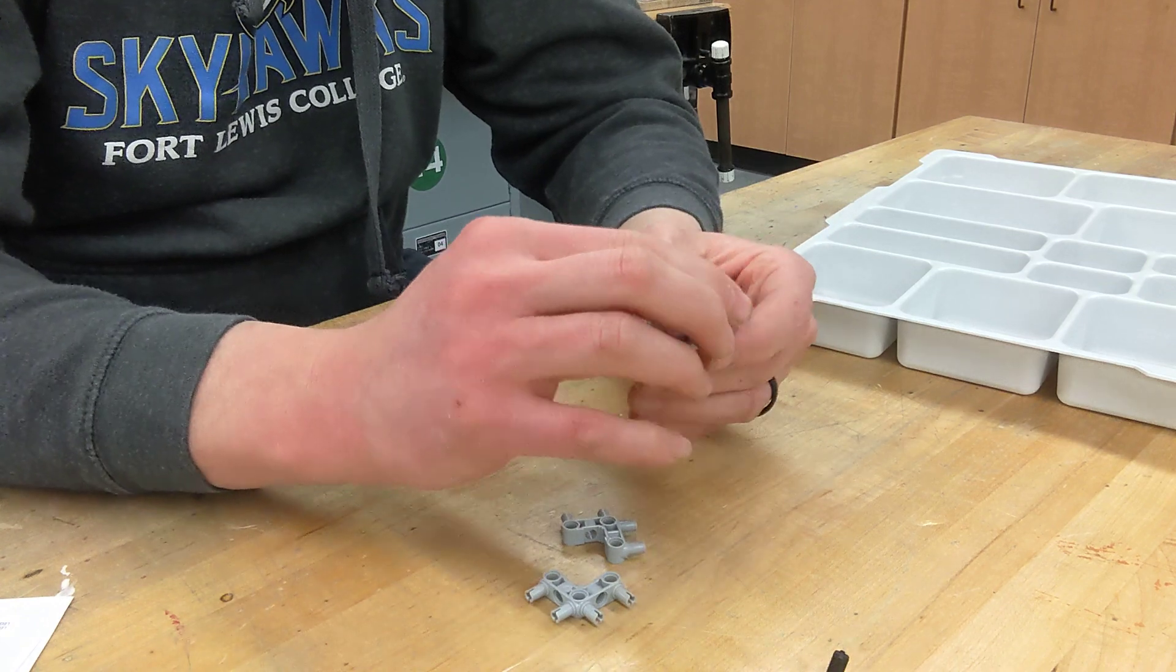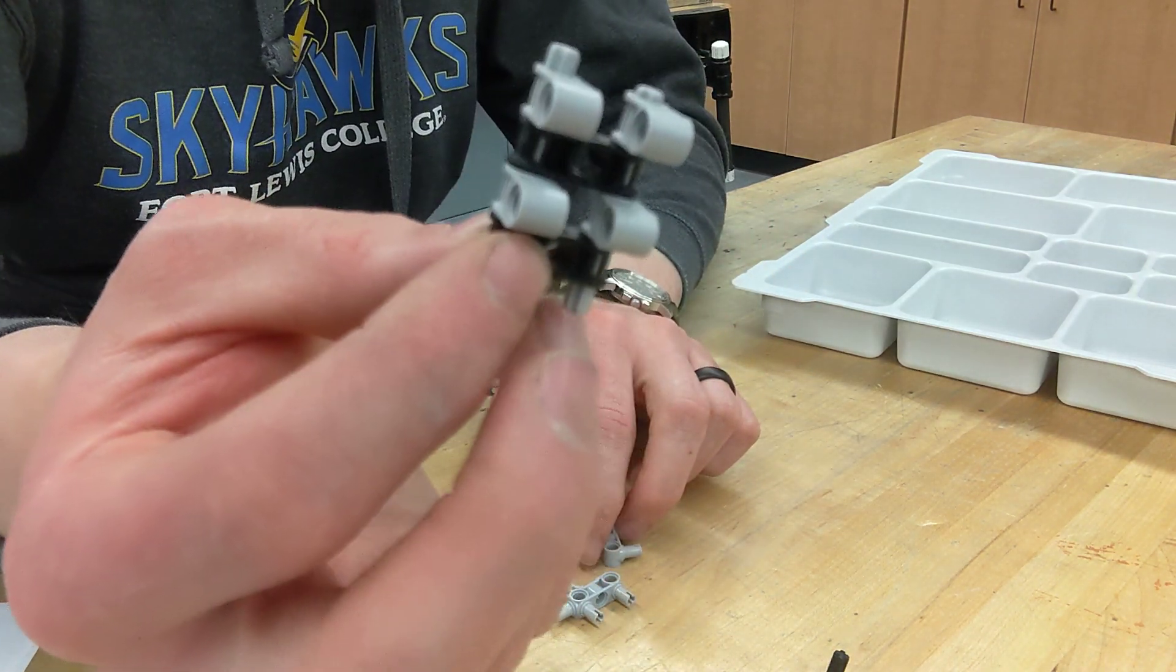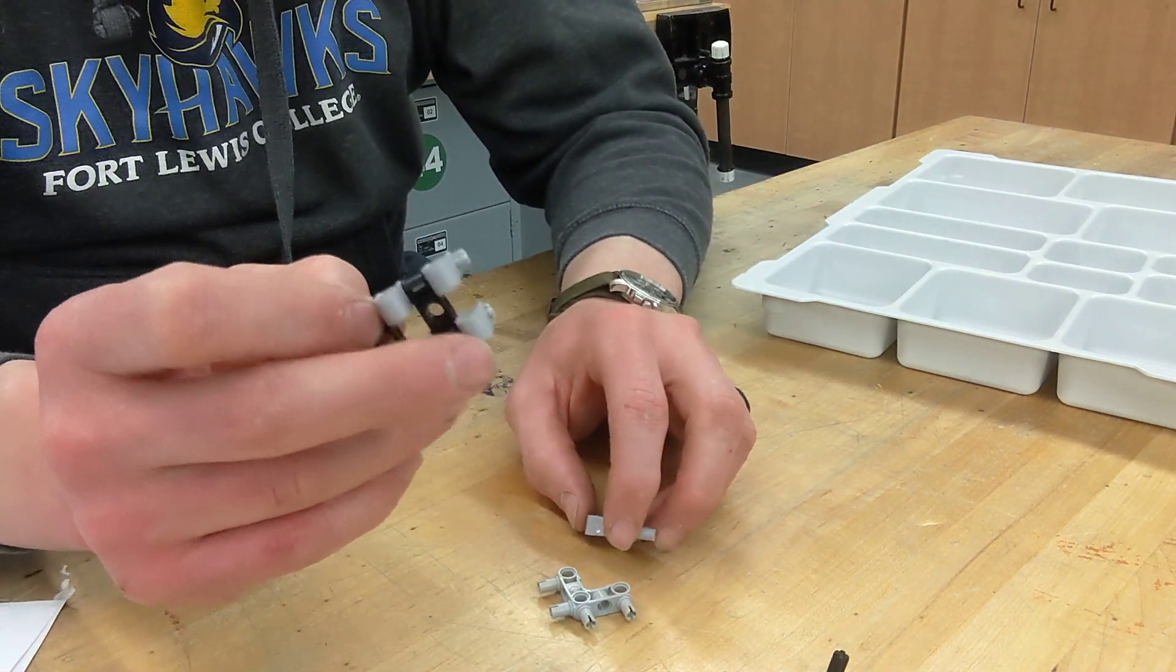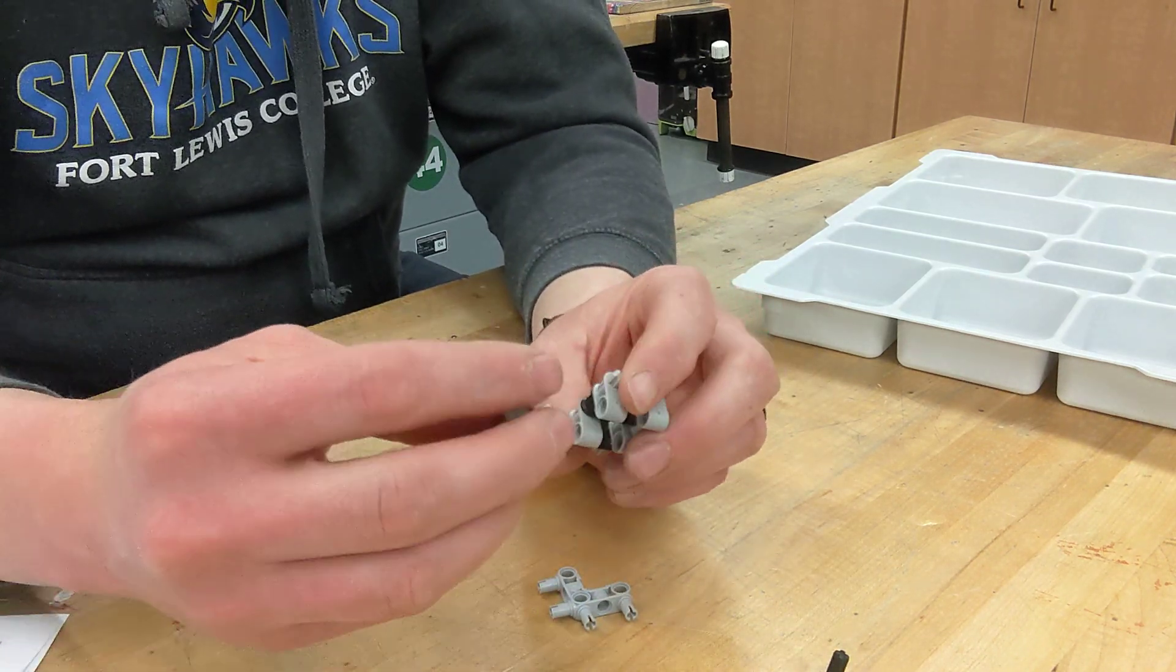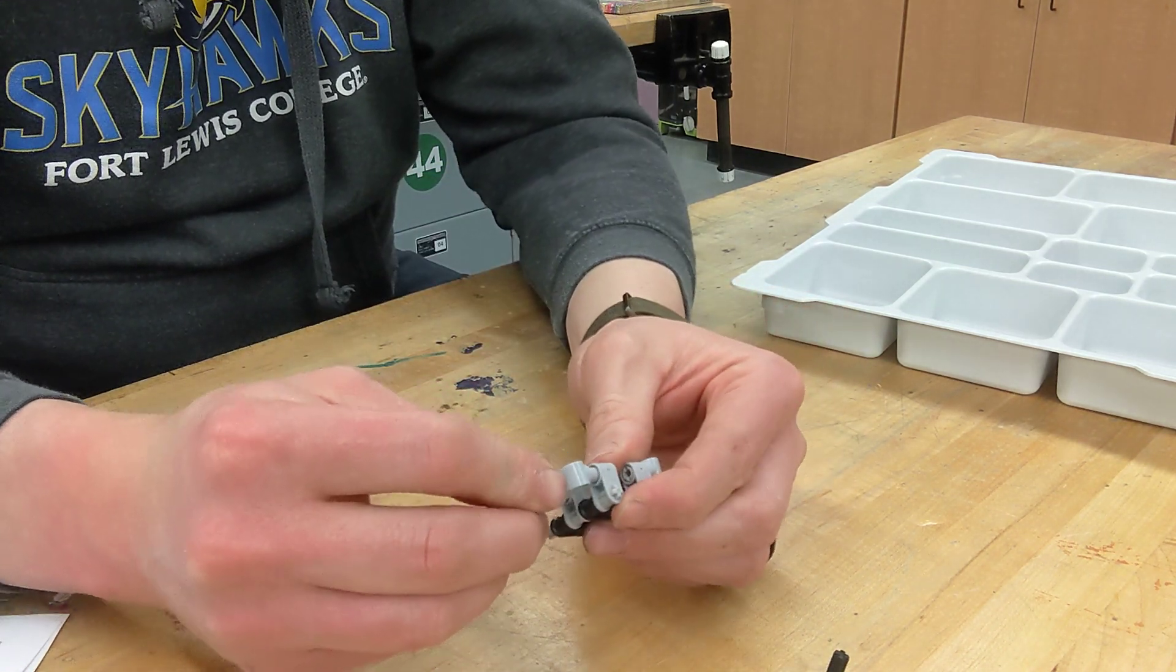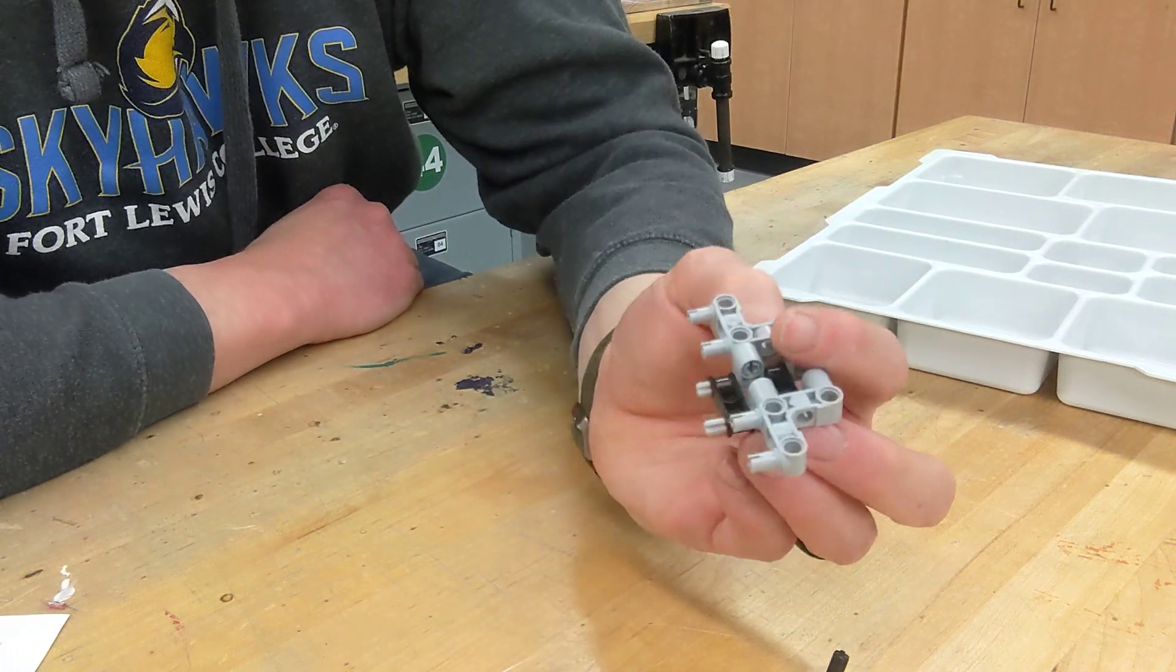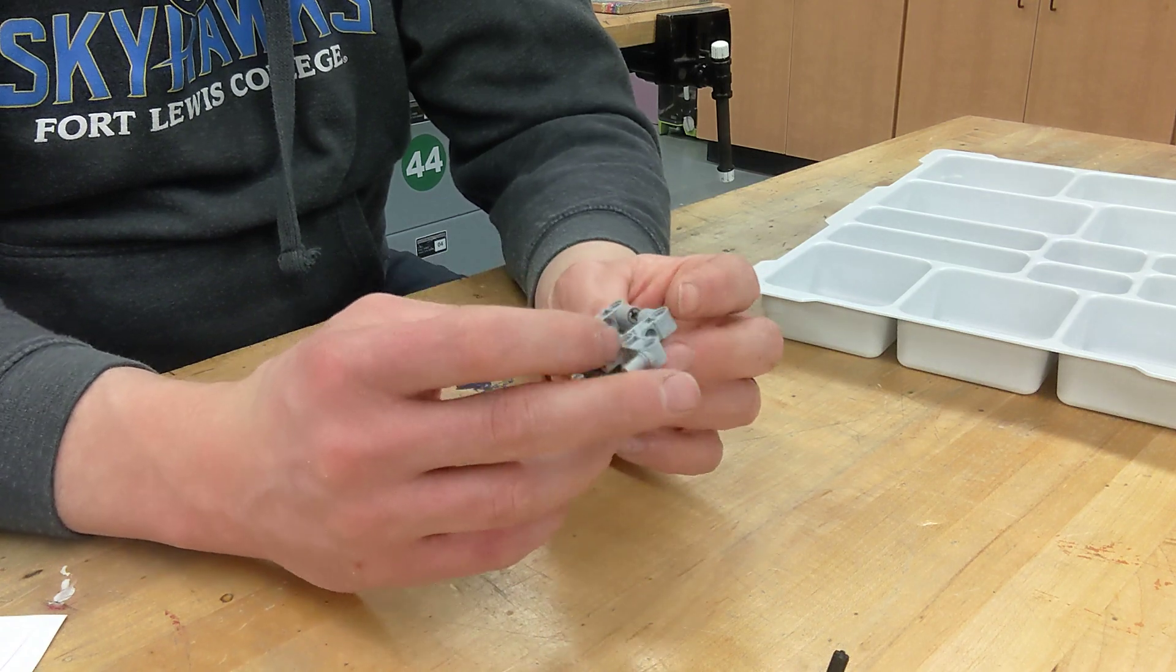All right, so you should have something that looks like this with those axles and the double cross blocks and the cross blocks. From there, you're going to take these angular connector pegs and attach them like so, and they're just going to snap in. So this here is going to clip into the back of your brick.